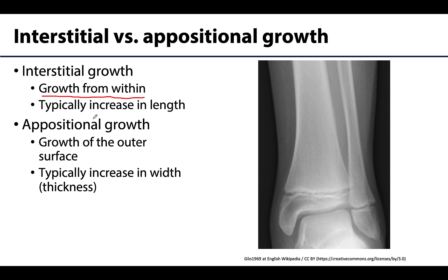Appositional growth means growth of the outer surface. So instead of at the epiphyseal plate, it is occurring on the outer surfaces. It's particularly important in terms of growth of bone width — what is happening just deep to the periosteum.